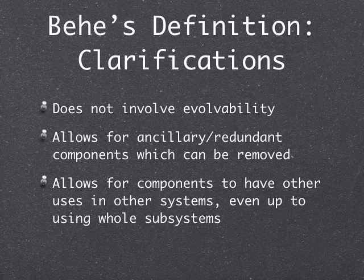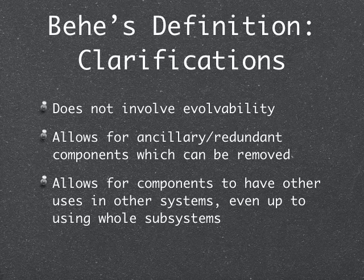Here are some clarifications. This definition does not address whether or not a system is evolvable — that's a separate idea we will cover in the next video. It also allows for additional or redundant components which can be removed. Irreducible complexity only means that there is a core with a basic function where the removal of a part removes the function of the whole system — it does not mean there aren't additional parts attached. It also allows for the components themselves to have uses in other systems, and even be entire subsystems that can be reused.